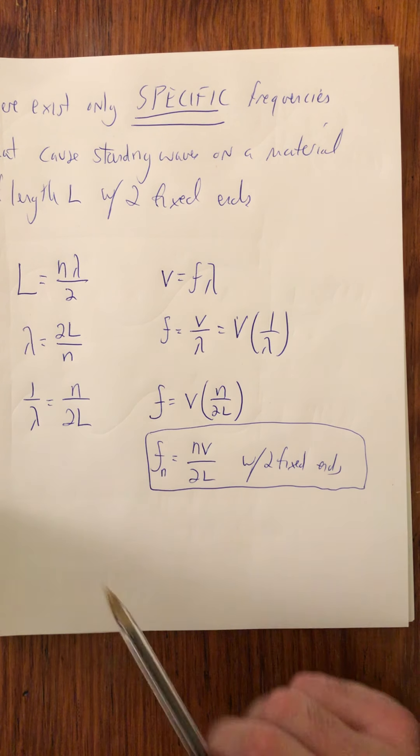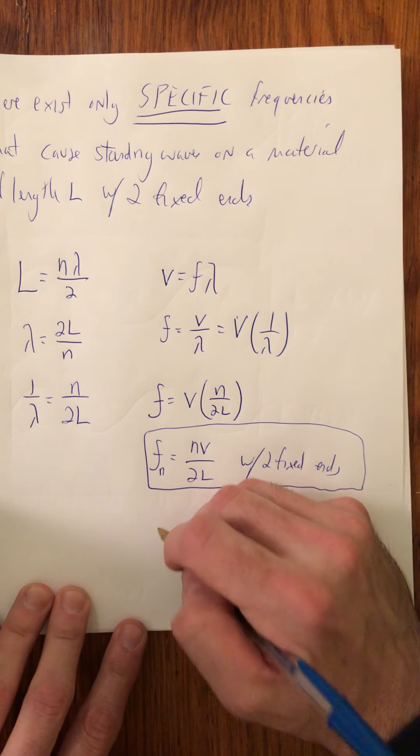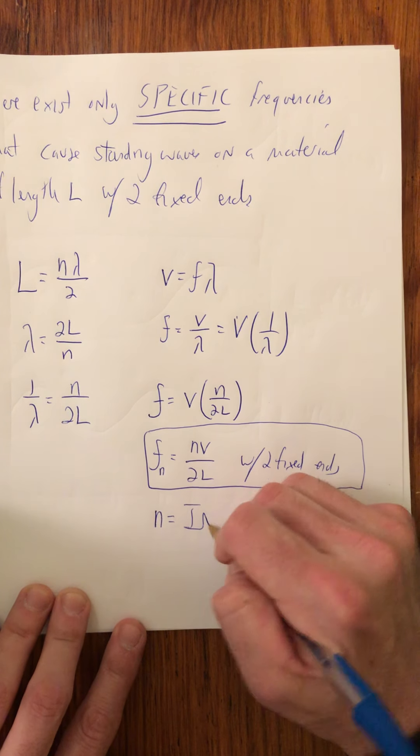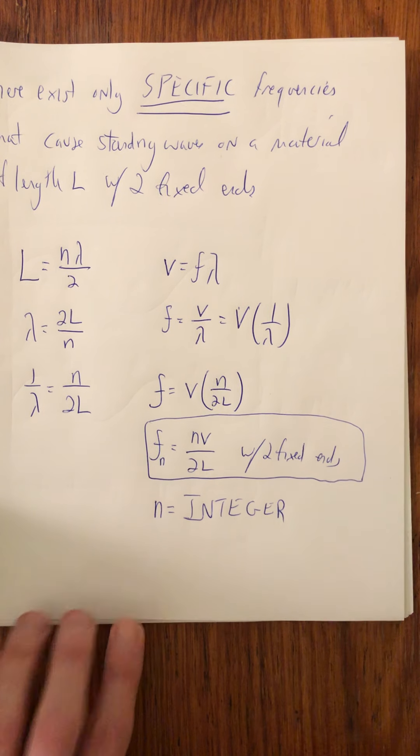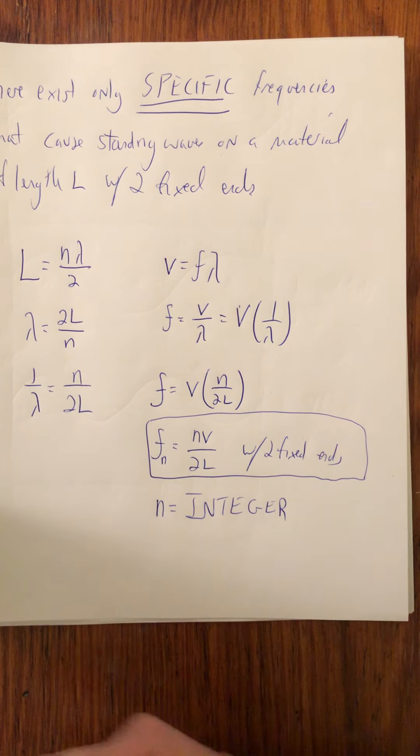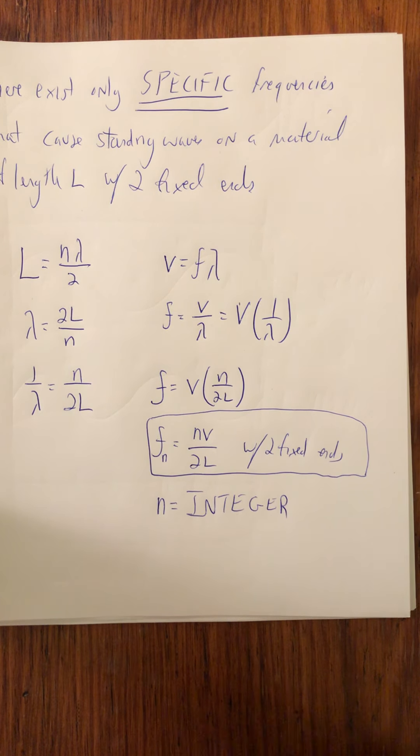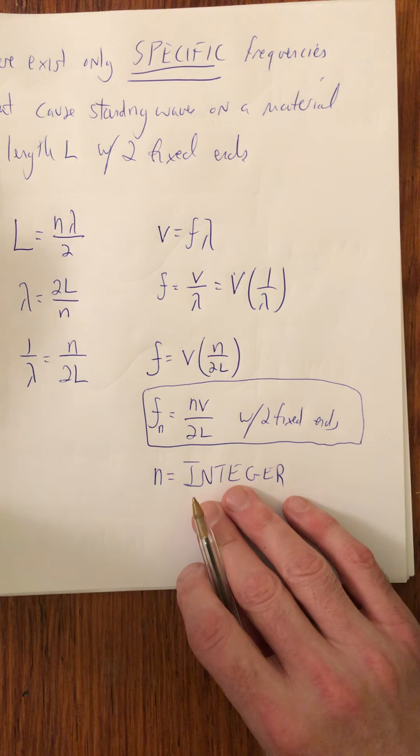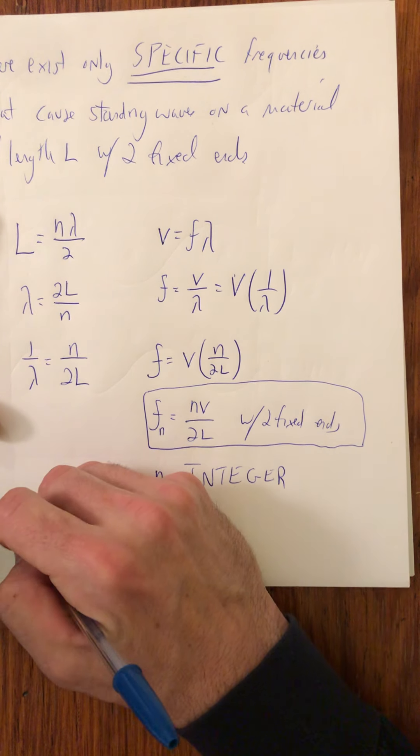So a couple things to note here. Notice that these are only specific frequencies because n has to be an integer. Since n is confined to only being integer quantities, there are only specific f's that work. All the other f's that would make n not an integer don't work and wouldn't produce standing waves. So what I need to do is define one last term. It's going to be an important term for us.